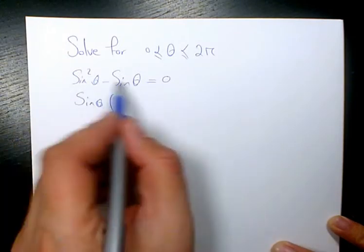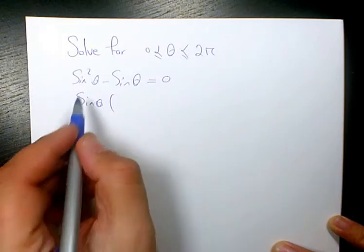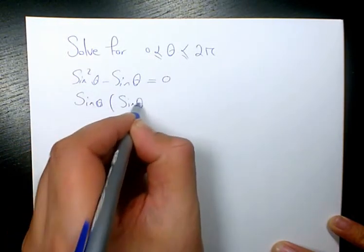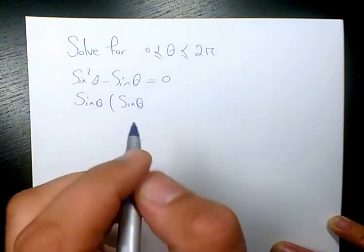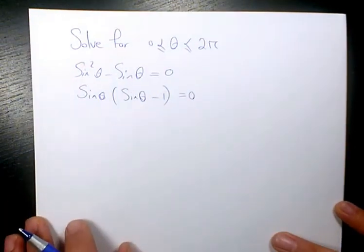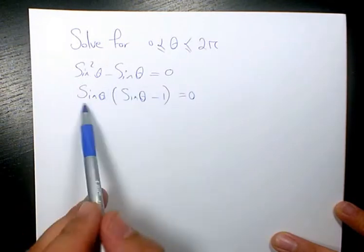So I factor sinθ because it's common between both terms. Sin²θ divided by sinθ will be sinθ. Negative sinθ divided by sinθ is going to be negative 1, equals 0.